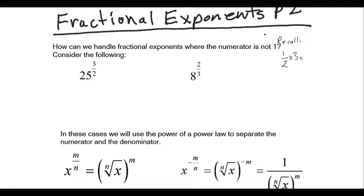You need to recall that one times one-half times three is the same as calculating one-half times three over one. The next line of our calculation is one times three over two times one, so we end up with three over two.